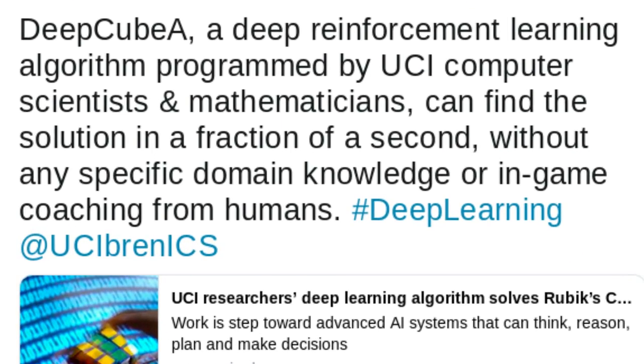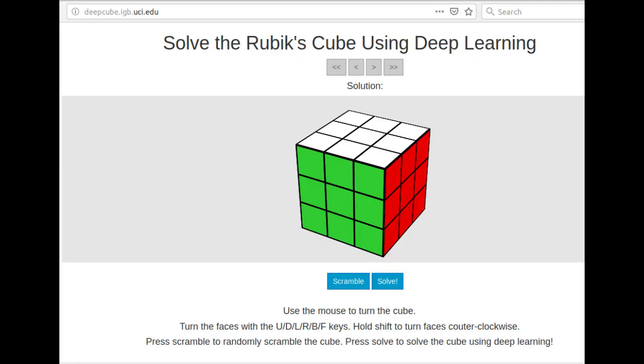UCI Research's Deep Learning Algorithm solves Rubik's Cube faster than any human. This work is tipped toward advanced AI systems that can think, reason, plan and make decisions.